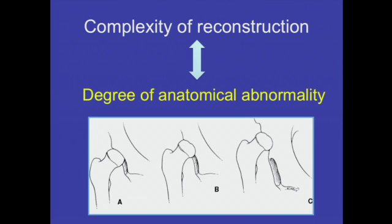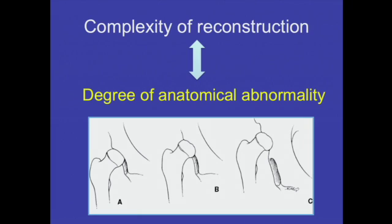The complexity of reconstruction in dysplastic hip depends on the degree of anatomical abnormality — whether it is a dysplasia, a subluxation, or a dislocation. The difficulty of dealing with this condition increases gradually as the degree of subluxation or dislocation increases.